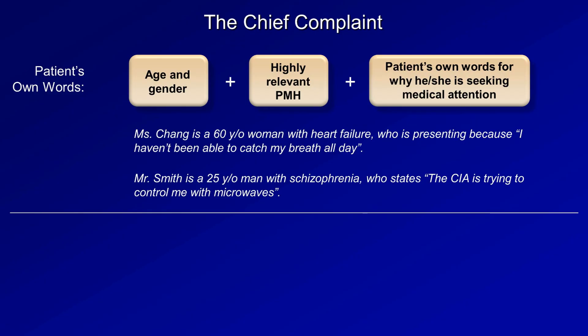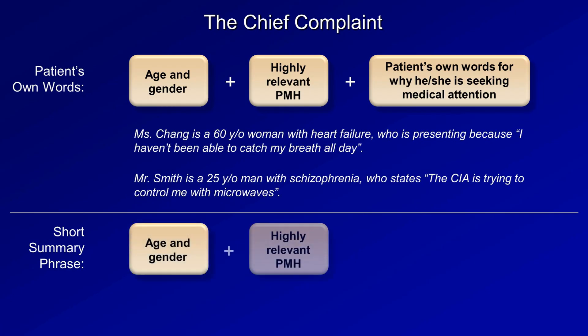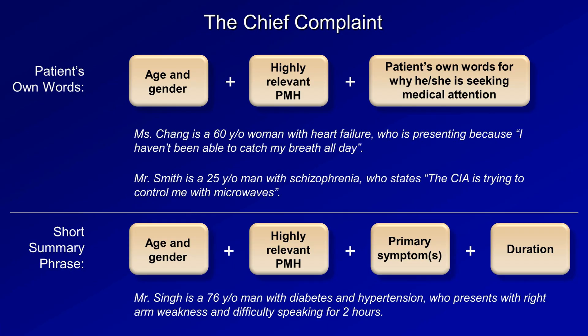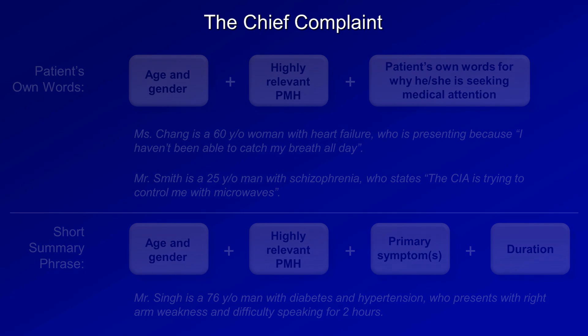The other option for the chief complaint is the short summary phrase: age and gender, plus highly relevant past history, plus the primary symptom or symptoms, plus the duration. For example, Mr. Singh is a 76-year-old man with diabetes and hypertension who presents with right arm weakness and difficulty speaking for two hours. Although the chief complaint may seem straightforward, it's the most commonly flubbed part of the whole presentation, and since it comes right at the beginning, getting it wrong will start you off on the wrong foot.